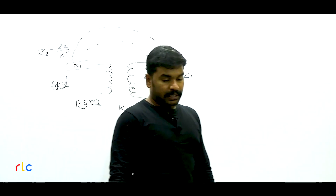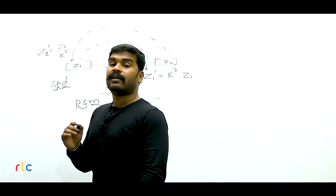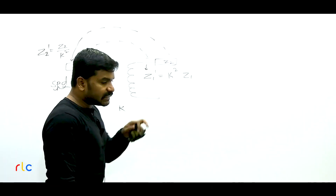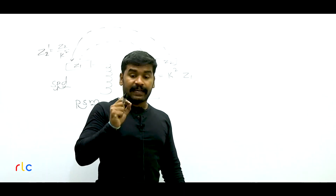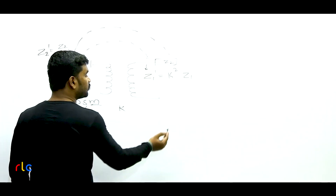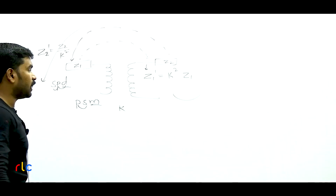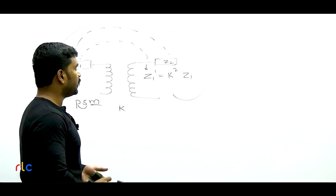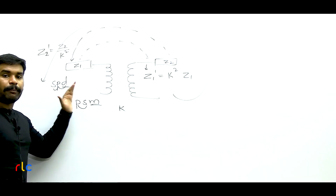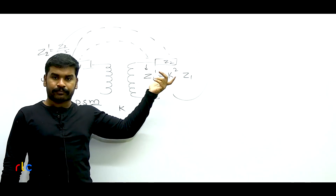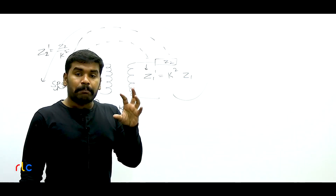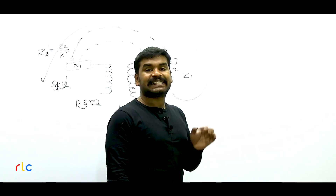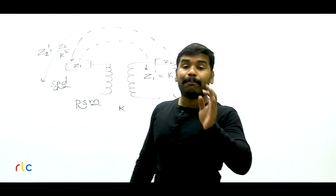The question says transform from one side to the other without specifying which direction. When no specific direction is given, it definitely means secondary to primary. This feature of a transformer — the ability to modify the apparent impedance — is used in an important application called impedance matching, which relates to the Maximum Power Transfer theorem. For maximum power transfer, load impedance must equal source impedance.